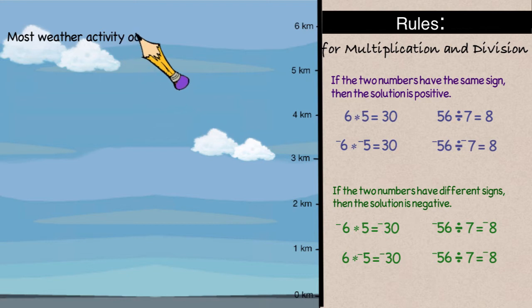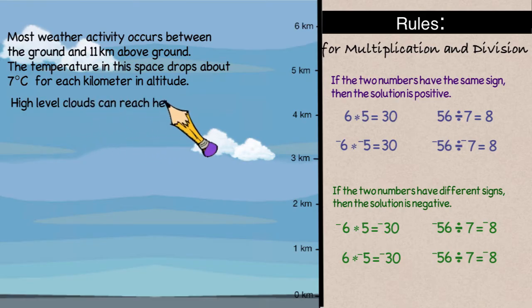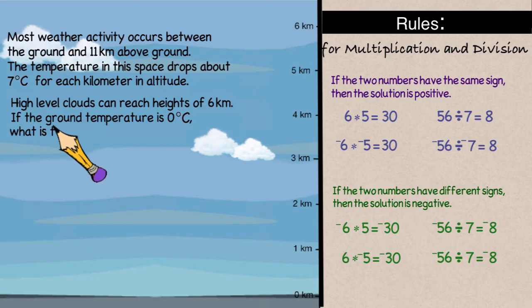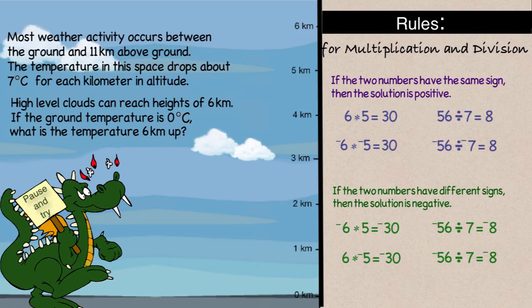Most weather activity occurs between the ground and 11 kilometers above the ground. The temperature in this space drops about 7 degrees Celsius for each kilometer in altitude. High-level clouds can reach heights of 6 kilometers. If the ground temperature is zero, what would the temperature be 6 kilometers up? Take a minute and pause the video and try to solve it on your own.